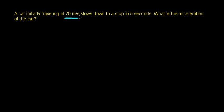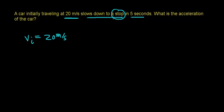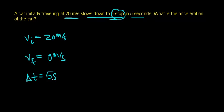In this video, we're going to find the acceleration of a car that is initially traveling with a velocity of 20 meters per second and slows down to a stop in 5 seconds. The initial velocity is 20 meters per second, and when the car slows down to a stop, the final velocity will be 0 meters per second. It takes 5 seconds to go from 20 meters per second to 0 meters per second, so our change in time is 5 seconds.